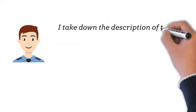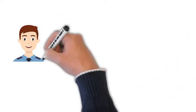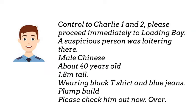I take down the description of the person. Control to Charlie 1 and 2, please proceed immediately to loading bay. A suspicious person was loitering there — male Chinese, about 40 years old, 1.8 meters tall, wearing black t-shirt and blue jeans, plump build. Please check him out now. Over.